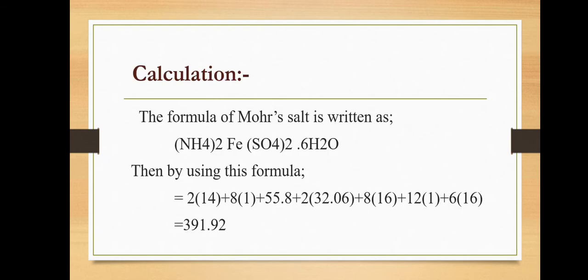Calculation. The formula of Mohr salt is written as (NH4)2Fe(SO4)2·6H2O. Then by using this formula, we will calculate the molar mass of Mohr salt, which is 391.92 grams per mole.